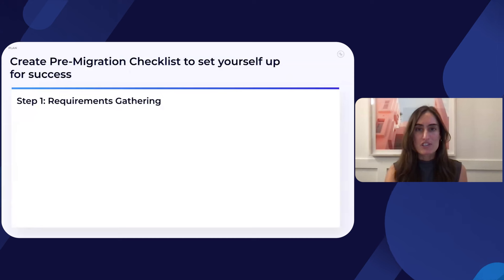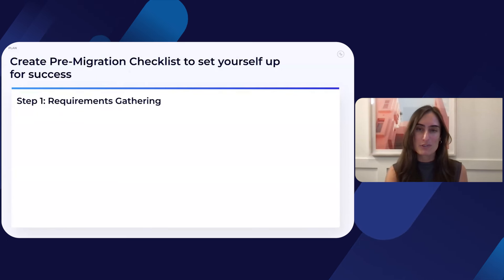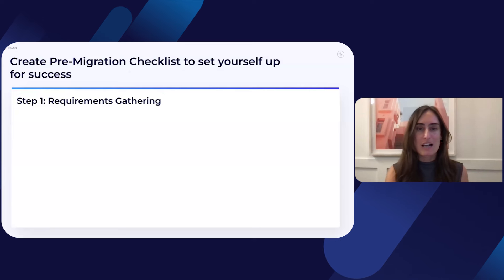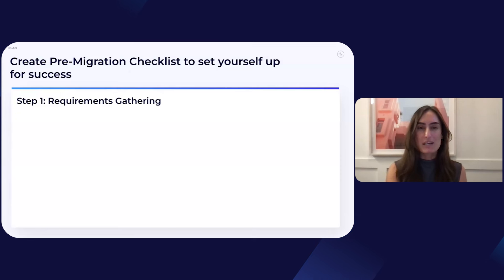As previously mentioned, thoughtful planning is key to the success of any migration. We've created a convenient pre-migration checklist to help our customers smoothly and easily migrate to Confluent Cloud. The pre-migration checklist breaks down into three components: requirements gathering, choosing your Confluent configuration, and reviewing the plan with all stakeholders. Let's begin with requirements gathering.